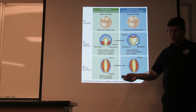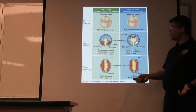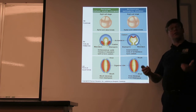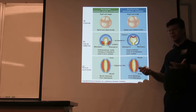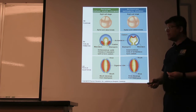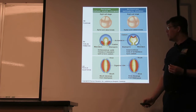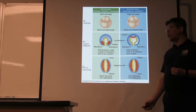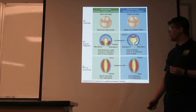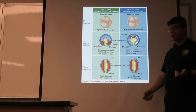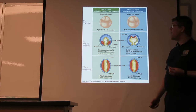Protostomes: first mouth. Typically that initial opening formed during gastrulation — that folding in — is what becomes the mouth, and the anus comes along later. Now, yes, in detail things do different stuff, and this is not something very easy to study — it's not all that well known for a number of groups. But that's the standard pattern.